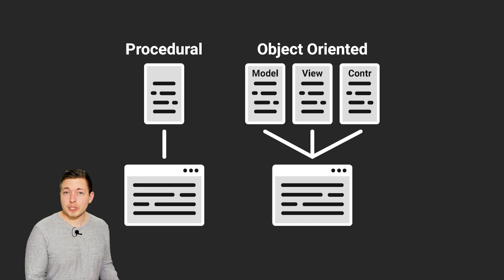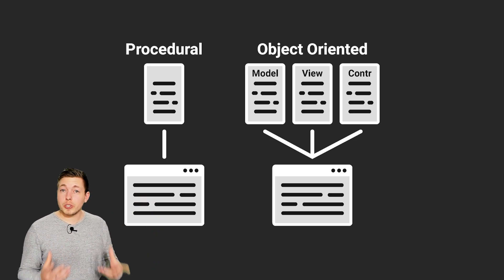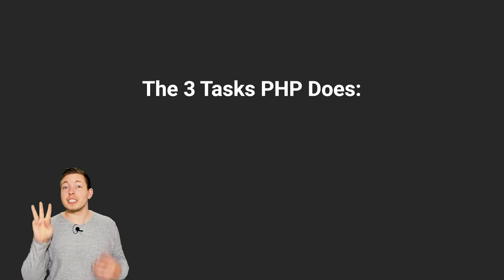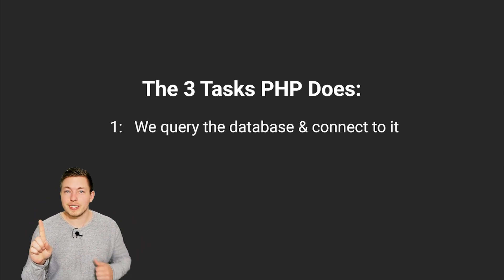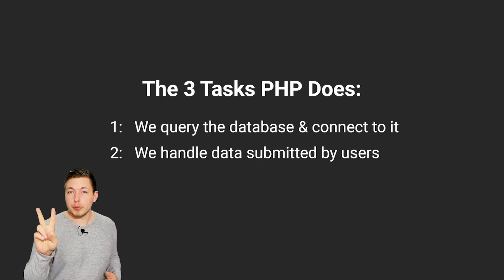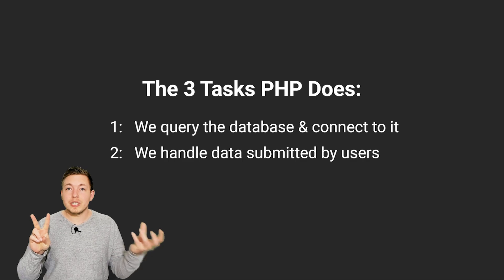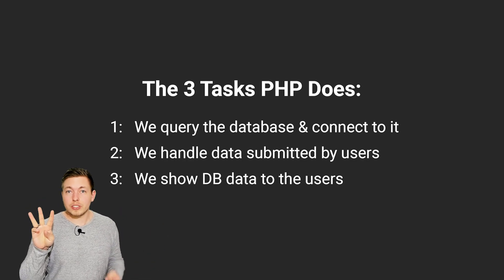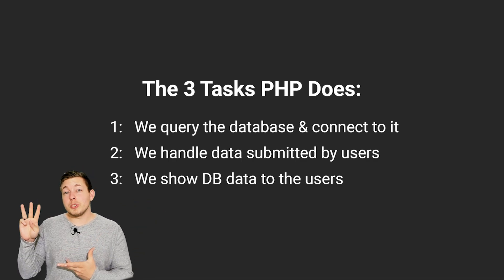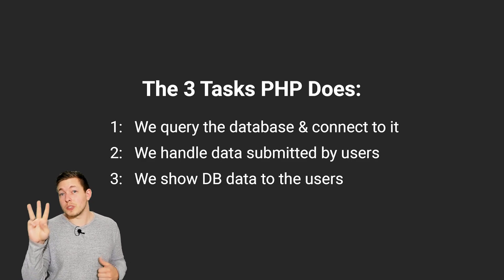Let's talk about how object-oriented PHP looks compared to procedural PHP on the technical side. Roughly speaking, when we want to code anything using PHP, we have three things we actually do: we connect to or query the database, we get input from users, and then we need to do something with that data. And the last thing we do is show things on the website to the user.